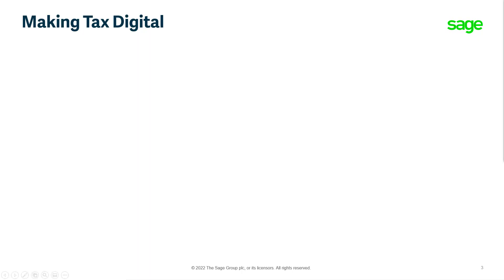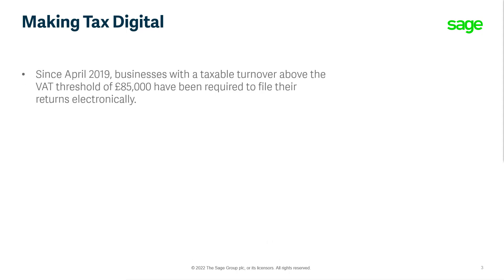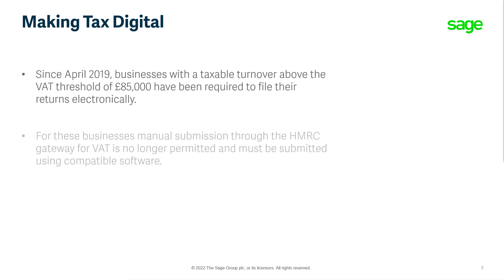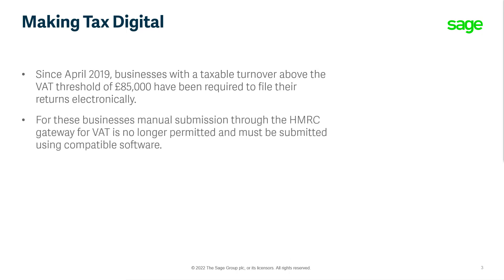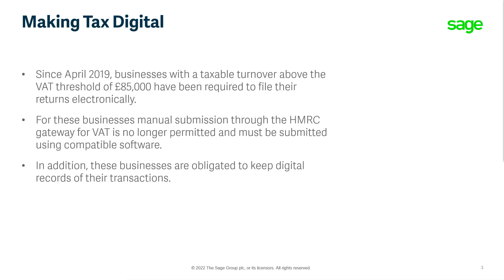Phase 1 of Making Tax Digital came into effect in April 2019. At this point businesses with a turnover above the VAT threshold of £85,000 were required to register and file their VAT returns electronically to HMRC. This removed the ability for these businesses to log on to the HMRC gateway and manually submit their figures, and required returns to be submitted from Making Tax Digital compliant software or through a compliant bridging software. These businesses also needed to keep digital records of their transactions.